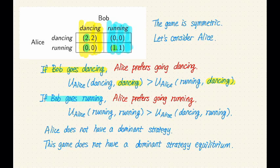If Alice goes running, then her utility is one. If she goes dancing, then her utility is zero. So one is better than zero. Alice strictly prefers going running than going dancing.